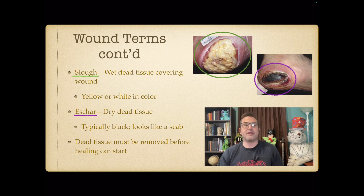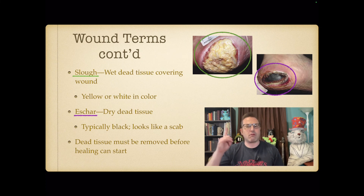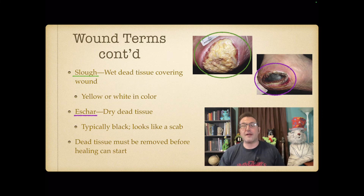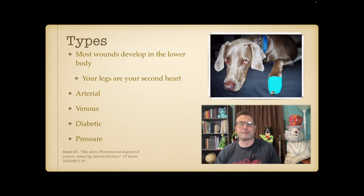There are two types of dead tissue, and that's important because dead tissue has to be removed before healing can start — healing can only happen on live tissue. Slough is wet dead tissue covering the wound; it's usually white or yellow in color. Eschar is dry dead tissue; it's typically black, may be brown or gray, and looks a lot like a scab. Both have to be cleared out before healing can begin.